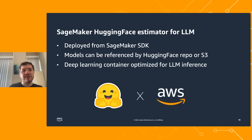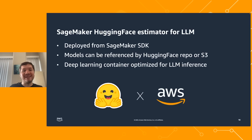SageMaker Hugging Face estimator for large language models is also deployed from the SageMaker SDK. The advantage here is that models can be referenced either by Hugging Face repo or S3, and they use a specific deep learning container optimized for large language model inference.